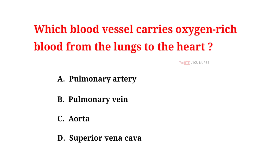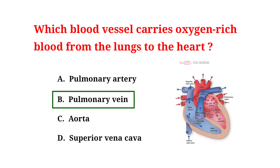Which blood vessel carries oxygen-rich blood from the lungs to the heart? A. Pulmonary artery. B. Pulmonary vein. C. Aorta. D. Superior vena cava. And the correct answer is B: pulmonary vein. The pulmonary vein carries oxygen-rich blood from the lungs to the heart.